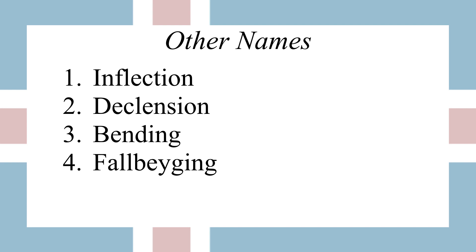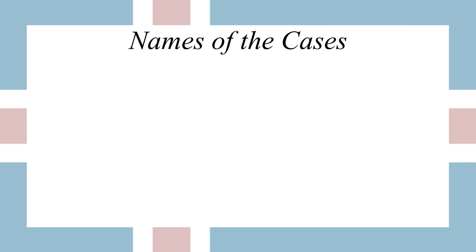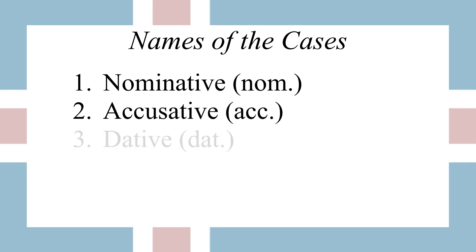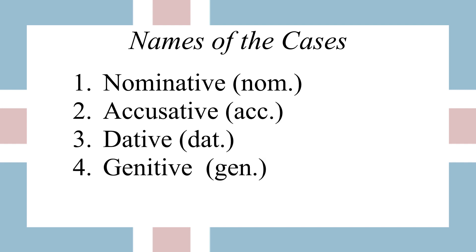All of these are referring to the same idea: that words can take one of many forms depending on their function in the sentence. There are four cases: nominative, accusative, dative, and genitive — four word forms, one for each of these cases.